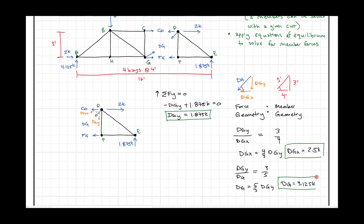When we solved for DGY we got a positive value, meaning our assumed arrow direction was correct. Every force I drew was pulling away from the joint — pulling away means tension. Because we got a positive sign, the arrows drawn pulling away were correct, so we can label DGY, DGX, and DG all as tension. If you have one component in tension, the other component and the main force vector will all be in the same direction.